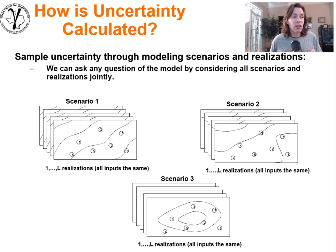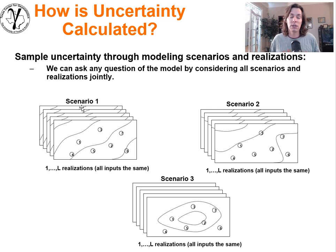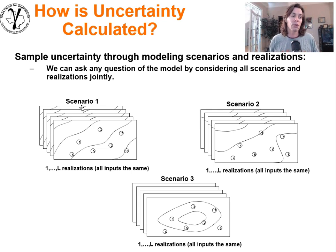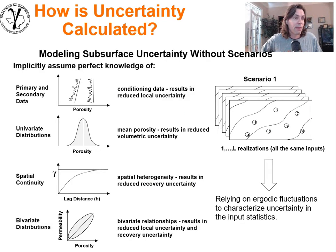Now we've solved the problem of getting uncertainty at one location, but we need to represent uncertainty jointly over the entire area of interest. We'll do that by using multiple scenarios and multiple realizations. Multiple scenarios where we change the modeling decisions and parameters used in the model, and multiple realizations given constant decisions and parameters to explore the space due to spatial uncertainty. So we have our set of scenarios and for each scenario we have multiple realizations.